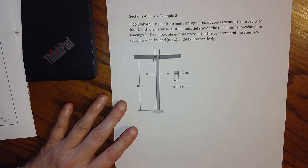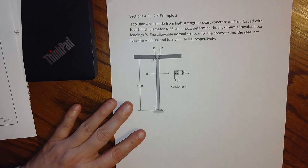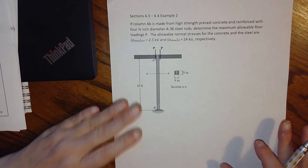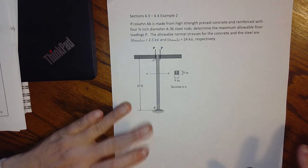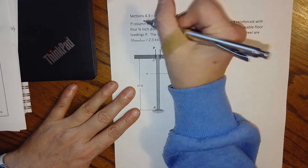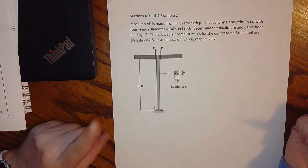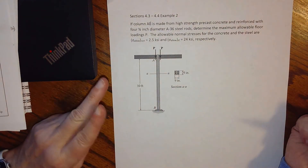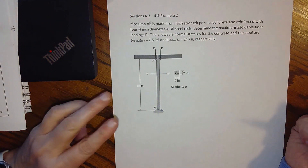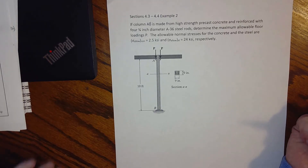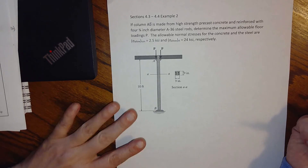Here is example two, sections 4.3 and 4.4. We're again looking at indeterminate axial problems, just with forces without temperature at this point. Column AB is made from high-strength precast concrete and reinforced with four three-quarter-inch diameter A36 steel rods.